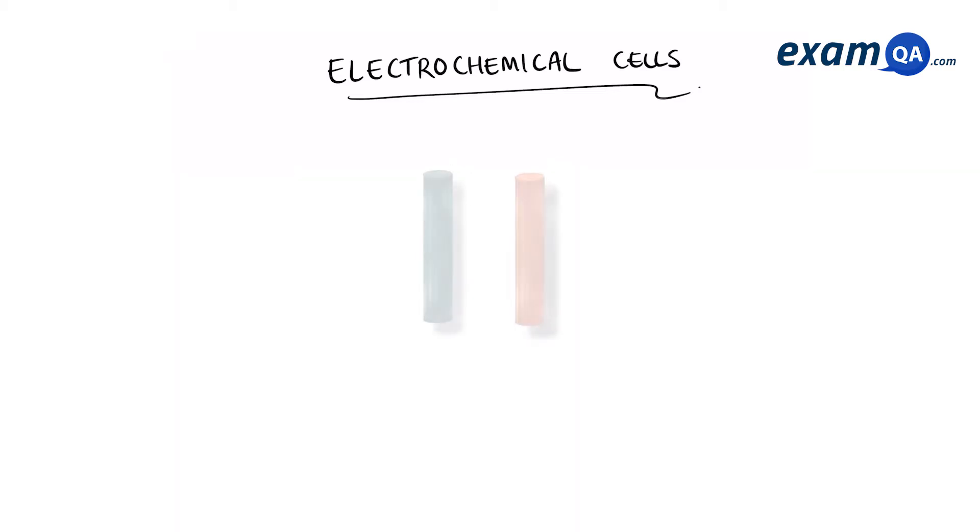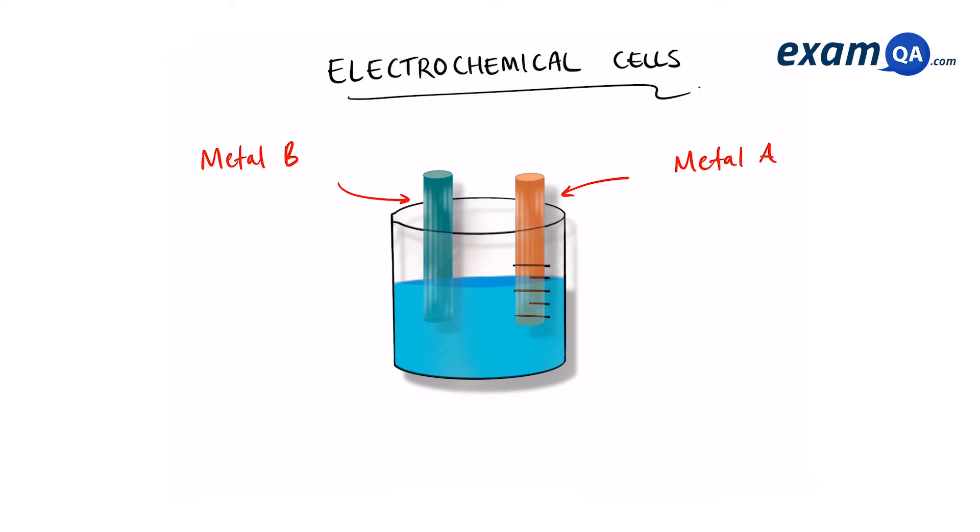The most basic electrochemical cell consists of two electrodes made from two different metals. They are then placed in an electrolyte, a solution that contains ions which the metals can react with. The electrolyte will help carry the charge around the circuit.